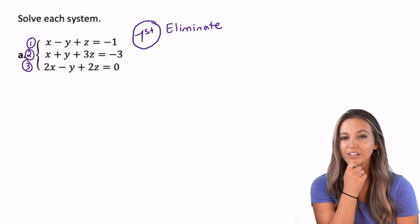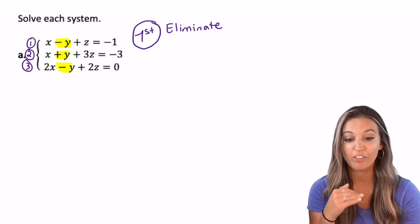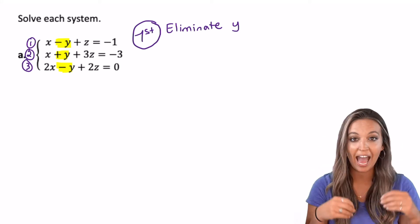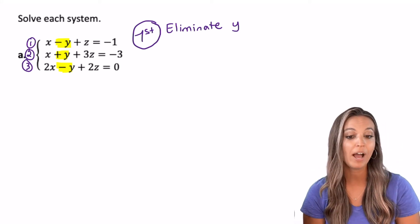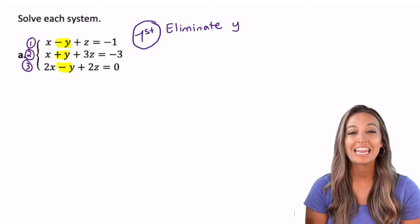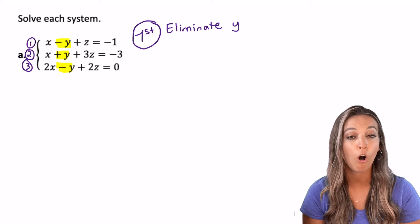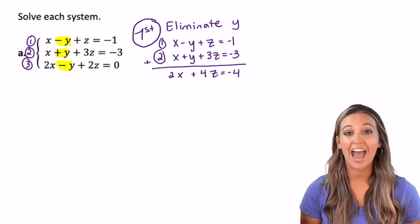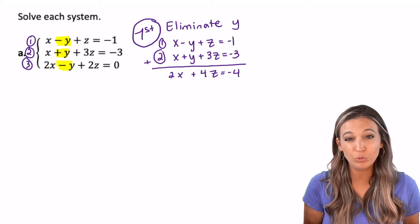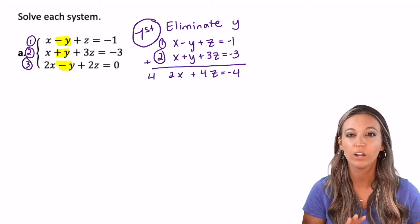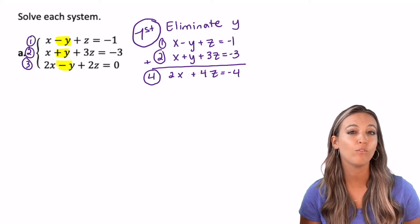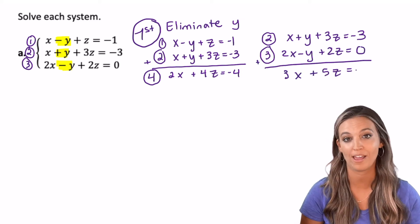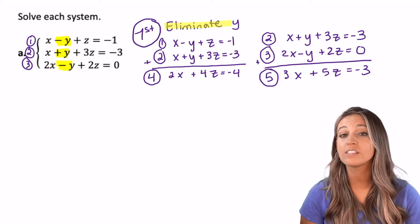I'm leaning towards y. In the first equation I have negative y, in the second I have positive y, and in the third I have negative y — alternating signs. So I can add equation one and two together to eliminate y, and then add equation two and three together to eliminate y. I have to eliminate y from all three equations. Adding equations one and two gives a two-variable equation — we'll call this equation four. We still need to get rid of y in equation three, so I'll pair equation three with equation two to add out the y. That gives another two-variable equation — equation five.